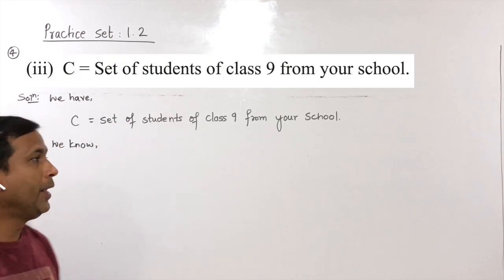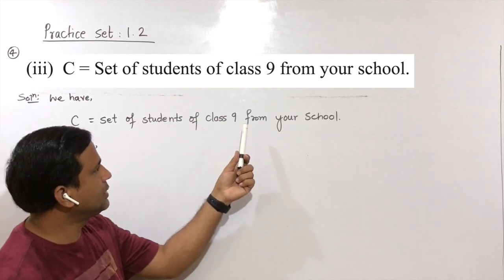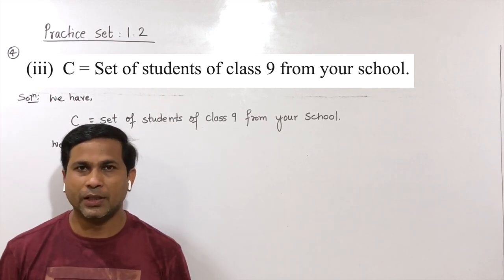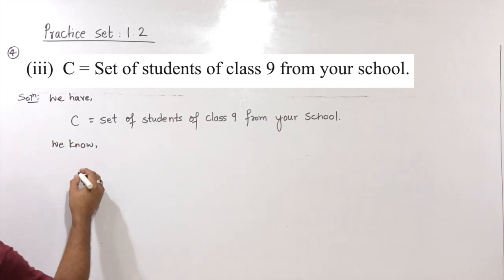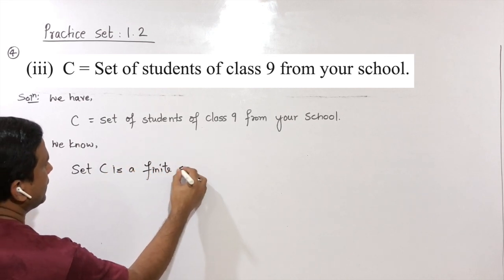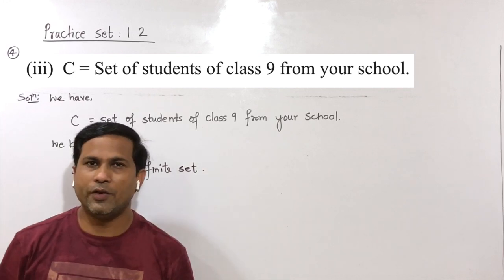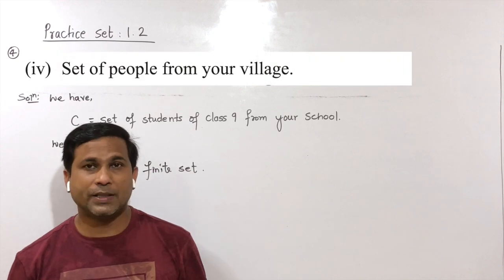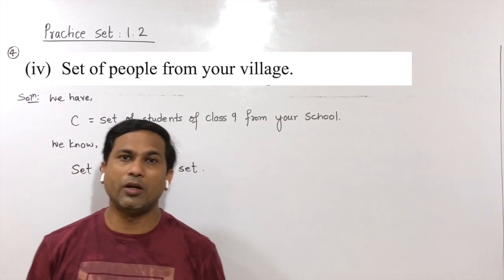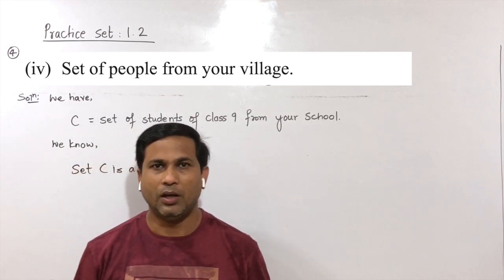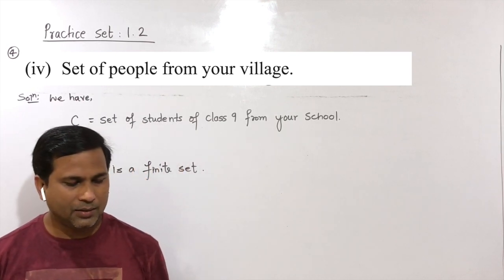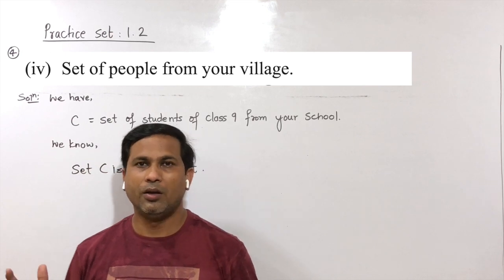Third: C is a set of students of class 9 from your school. You can count the number of students in standard 9, therefore set C is a finite set. Fourth: set of people from your village. You can count the number of people in a village — as done in a census every 10 years — so it is countable, and this set is a finite set.